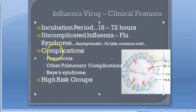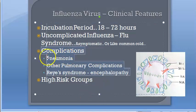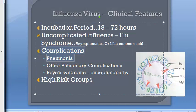Now for complications: there are pneumonia, other respiratory/pulmonary complications, and Reye's syndrome — which is encephalopathy. For pneumonia, secondary bacterial pneumonia is the most common complication. This is not caused by the virus directly but by a secondary bacterial infection. The causative agents are staphylococci, pneumococci, and Haemophilus influenzae.